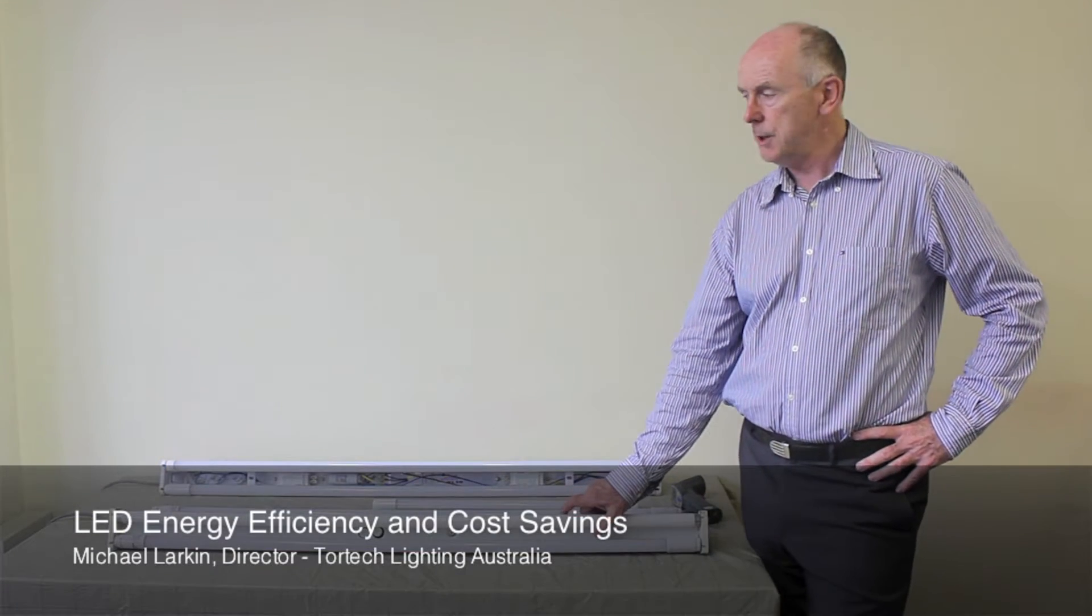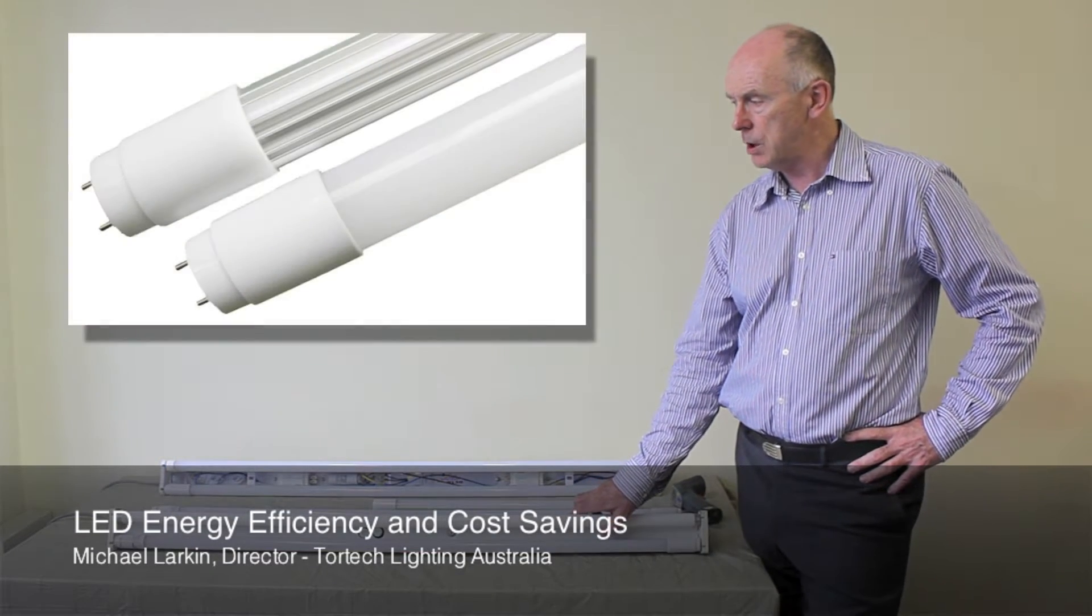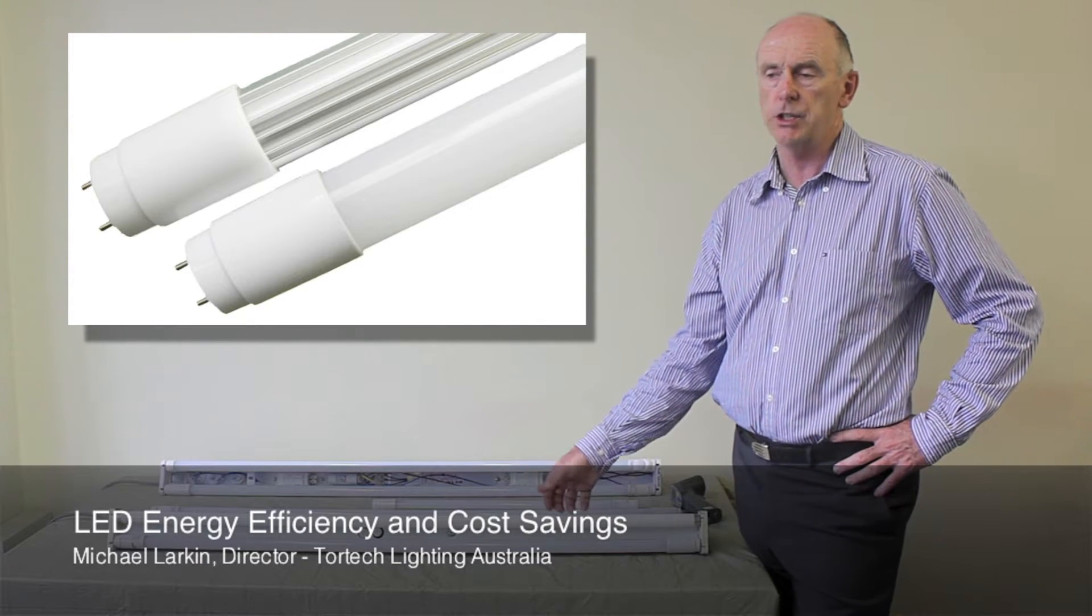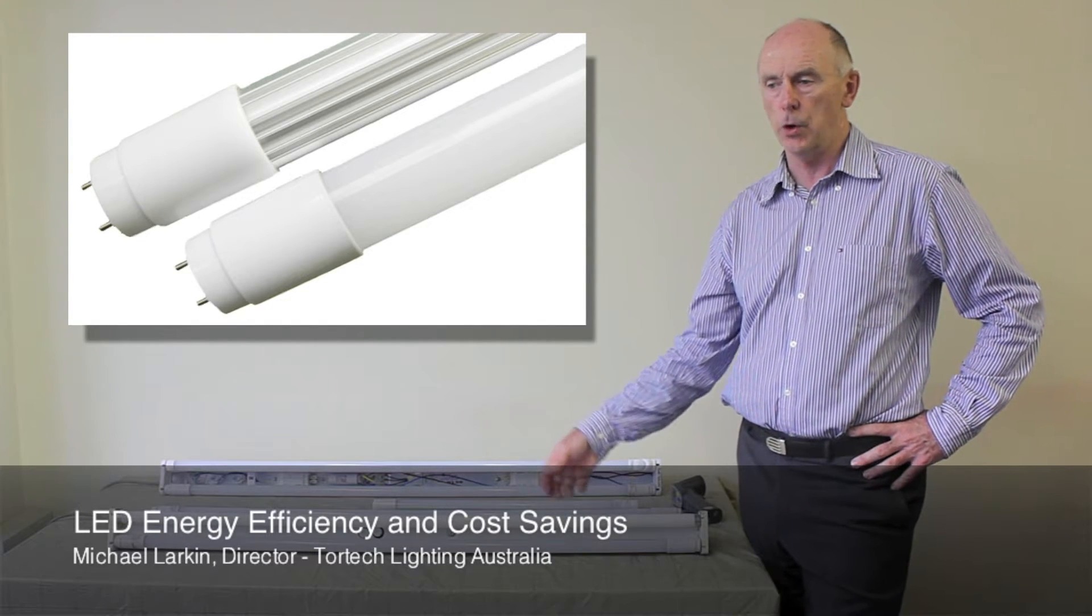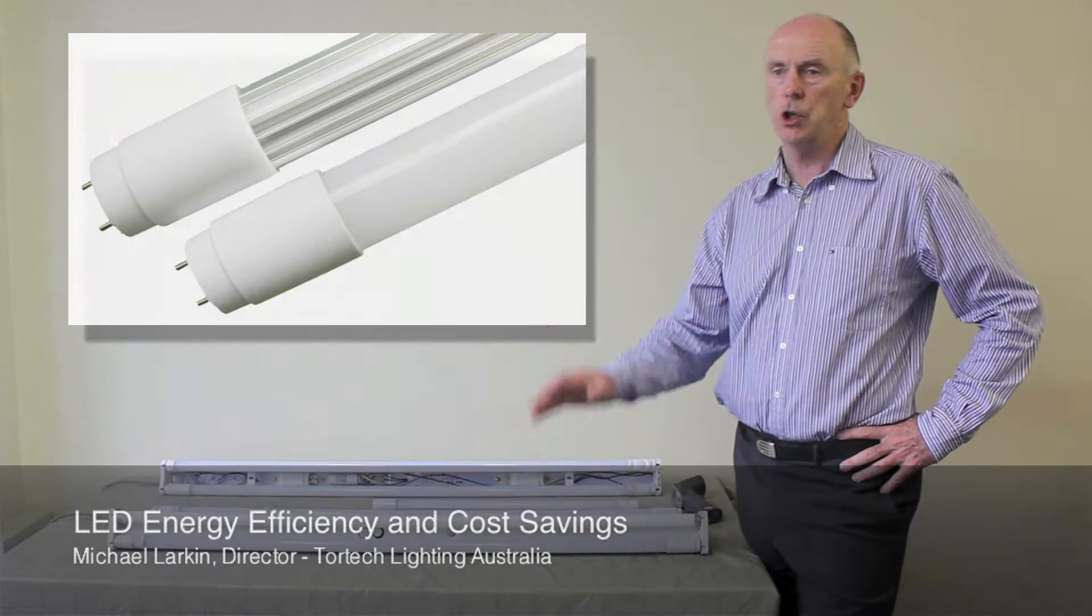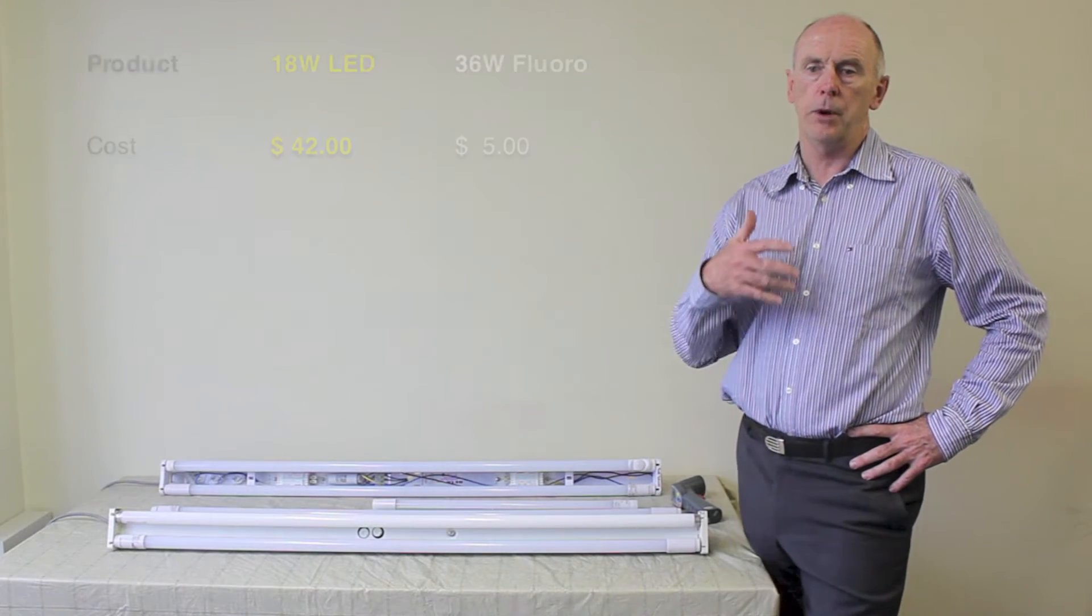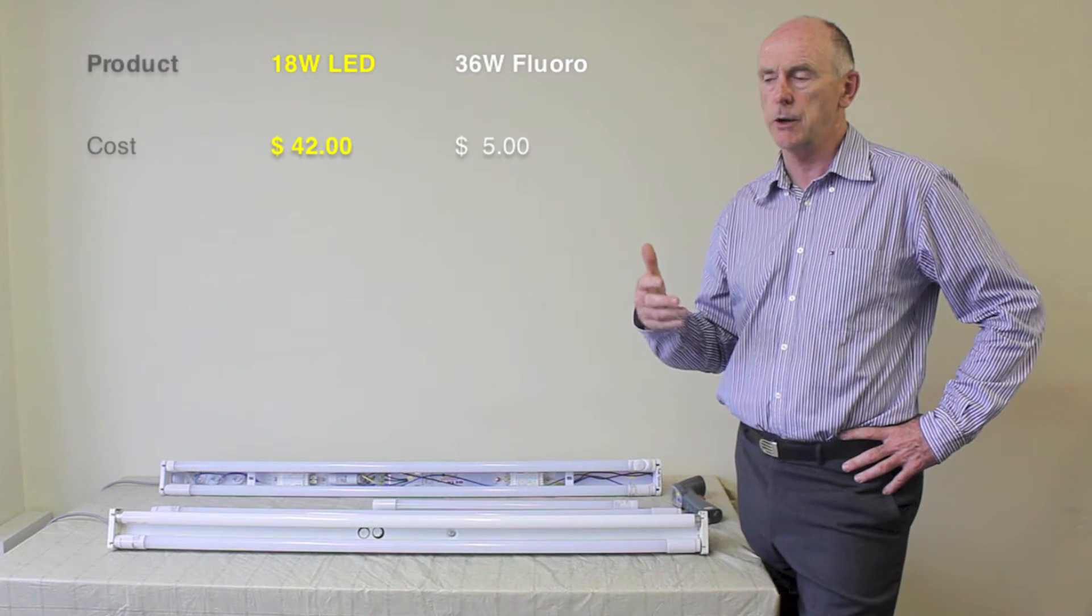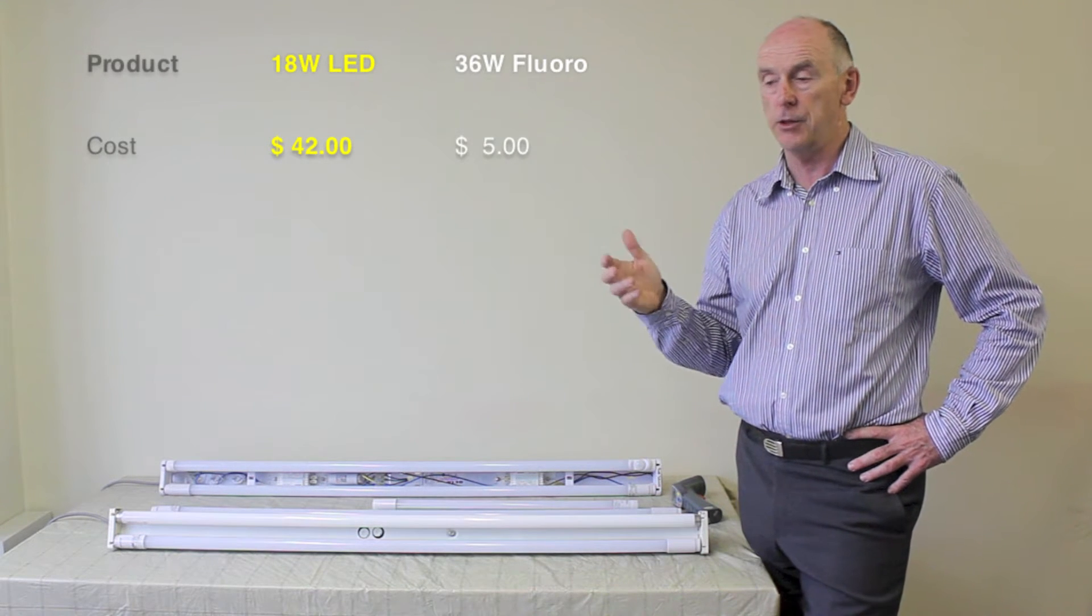A typical fluorescent tube will cost you around $5 for a 36 watt, whether it be cool white or normal white. An LED tube for volume pricing will be around $40-$42 per tube, so you've got a differential there of around $35.